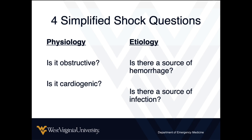From a physiologic perspective, the first question is: is it obstructive shock? Obstructive shock can be harder to identify and is not the most common cause, so it's easy to forget. Quickly crossing it off the list — or rapidly identifying it — can make a big difference. This is where you'll save lives when you identify it when it wasn't otherwise suspected. The second question is: is it cardiogenic? Is it pure cardiogenic shock, or is there a cardiogenic component alongside another form of shock that should make you more cautious about, say, slamming six liters of normal saline into that patient?